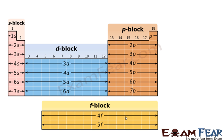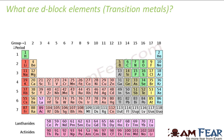D block is the block where the last electron enters the D orbital. F block is the one where the last electron enters the F orbital. So based on the last electron entry, we classify elements as S block (last electron enters S orbital), P block (last electron enters P orbital), D block (last electron enters D orbital), and F block (last electron enters F orbital). So you can see the D block transition metals — these are my D block elements.